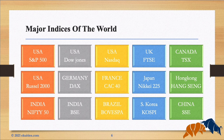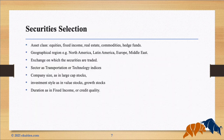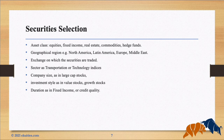Now let's see how security selection is done. An index's constituents may be grouped based upon the asset class — equities, fixed income, real estate, or commodities — or by geographical region such as North America, Latin America, Europe, or Middle East. Also by the specific exchange, or by sectors and industries such as transportation or technology indices, by company size such as large cap or small cap stocks, by investment style such as value and growth stocks, and finally by duration such as fixed income or credit quality.